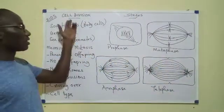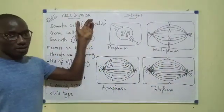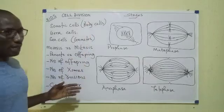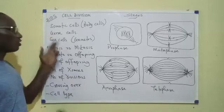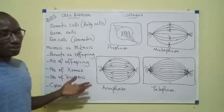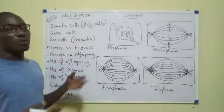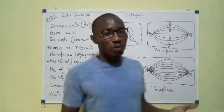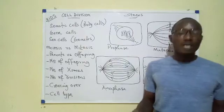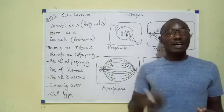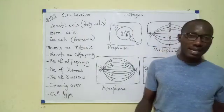Cell division, the process of a cell dividing. First, what are the types of cells we have? We have somatic cells or body cells, germ cells, and sex cells. The sex cells are also called gametes and we only find gametes in the gonads - the testes in males and the ovaries in females. This means that the sex cells are the sperm in a man and the eggs in a woman.